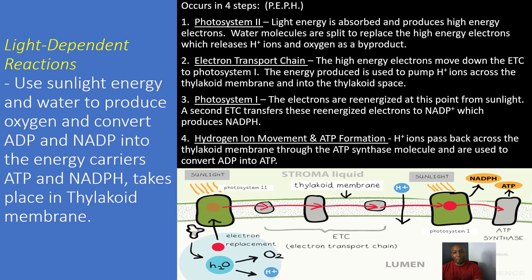The light-dependent reaction actually occurs in four steps, and I like to use the acronym PEPH to help remember them. The first step is Photosystem II. This is where light energy is absorbed and produces high-energy electrons, and water molecules are split to replace those high-energy electrons, which releases hydrogen ions and oxygen as a by-product.